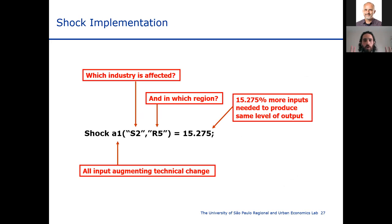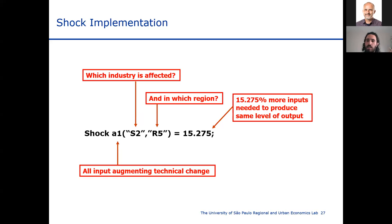How does the CGE model work? We shock specific regions and sectors — only sector two, which is coffee growing, is affected. In Colombia's input-output system, the coffee industry is separated into two industries: one for growing only, and one for roasting, greening, and packing, called coffee processing. The shock naturally only affects growing, as it is a climate change shock affecting crop productivity. The regions are affected differently. For example, region 5 with a shock of 15.275 means that region is going to need 15% more inputs to produce the same level of output — so positive shock values are actually bad for the economy.